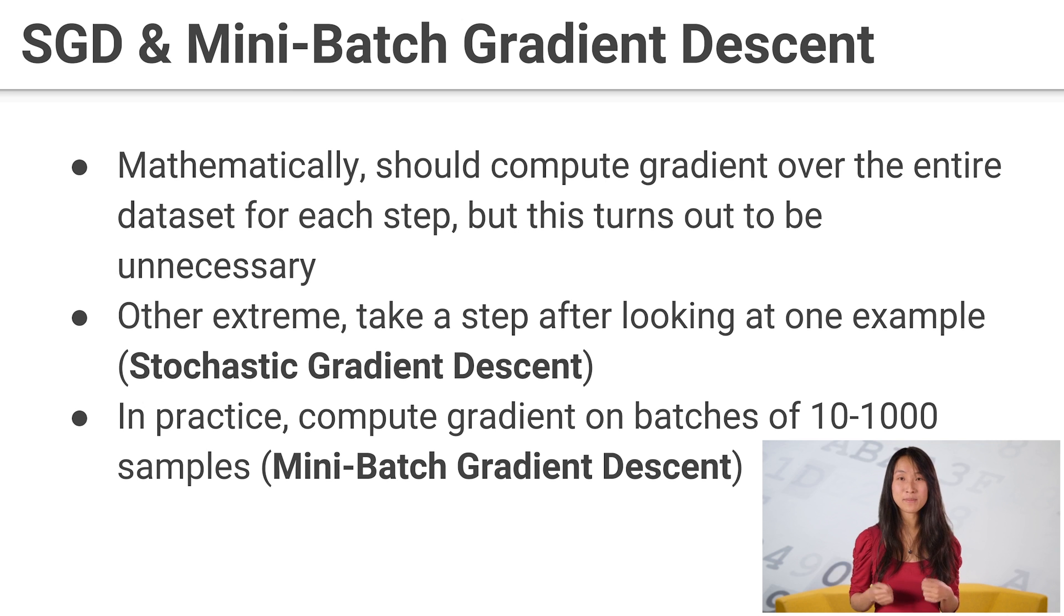In practice, we adopt an intermediate solution. Rather than use one example or the entire dataset, we use a small batch, somewhere between 10 and 1,000 examples, to perform our steps. This is called mini-batch gradient descent.